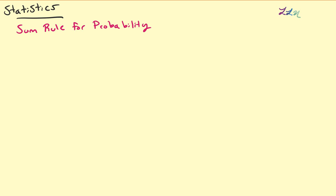Hello, and in this video we're going to talk about a very important rule in terms of probability. First off, recall what the general definition of a probability is: the probability of an event E is equal to the size of its event space divided by its corresponding sample space. And always remember that any probability must always be between 0 and 1.